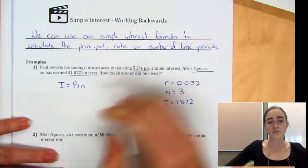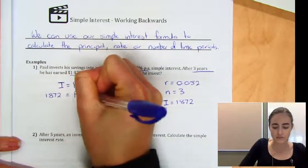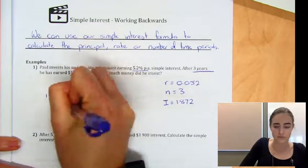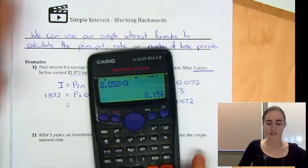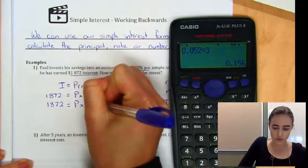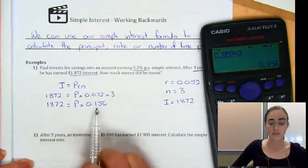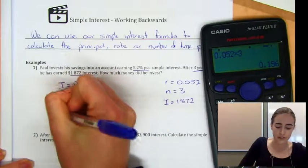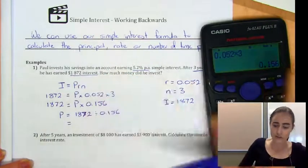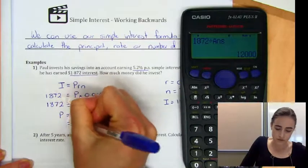So we know those three values, we're going to substitute those into our formula. So we're going to have 1,872 equals P times 0.052 times 3. Now we're going to simplify this. 0.052 times 3 would give us 0.156. So P times 0.156. Now to figure out the value of P, we're going to go 1,872 divided by 0.156. So P equals 1,872 divided by 0.156, which will give us $12,000.